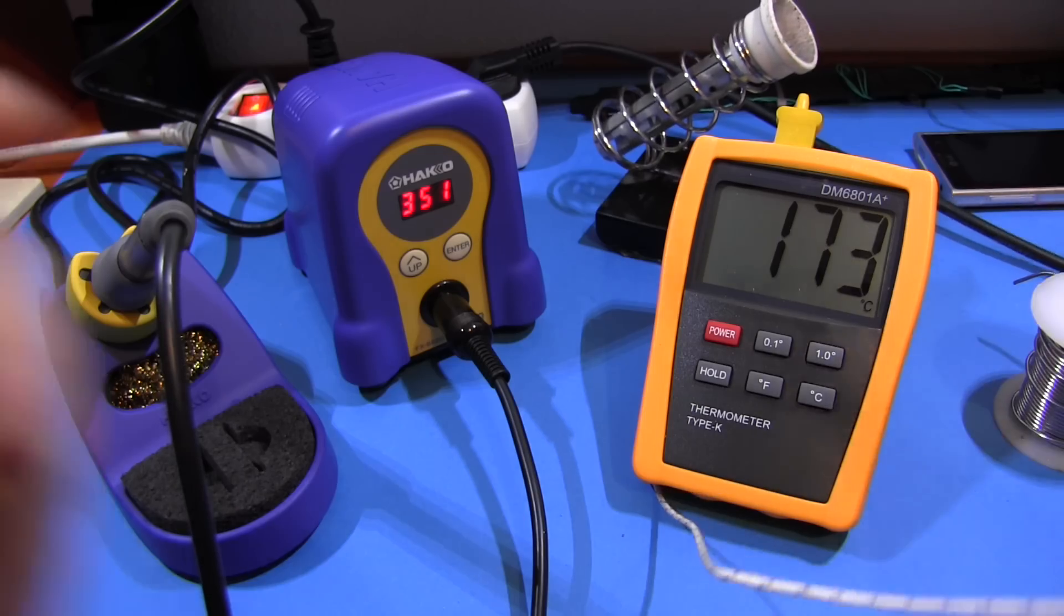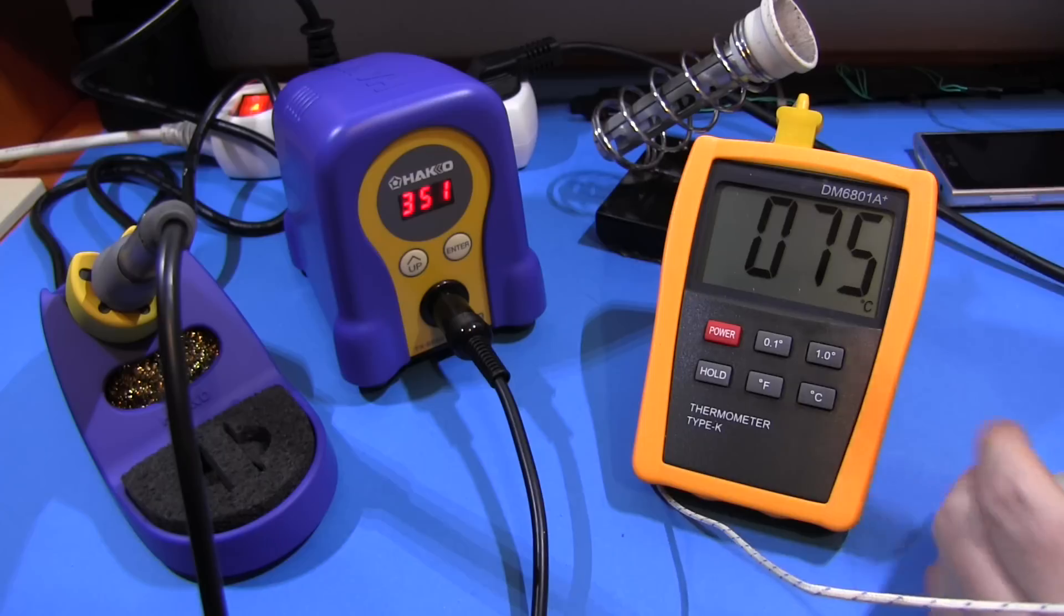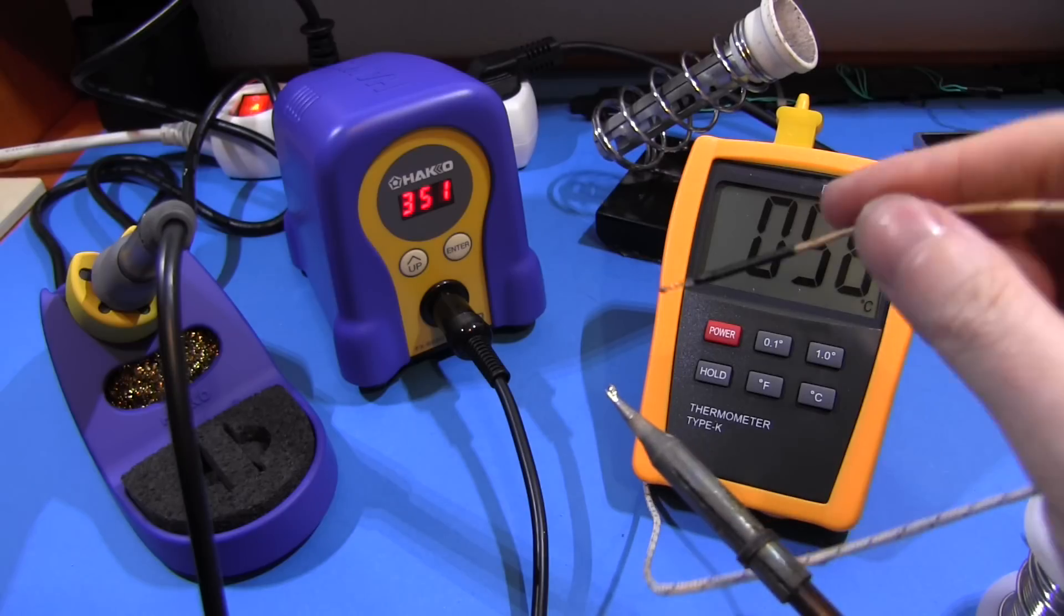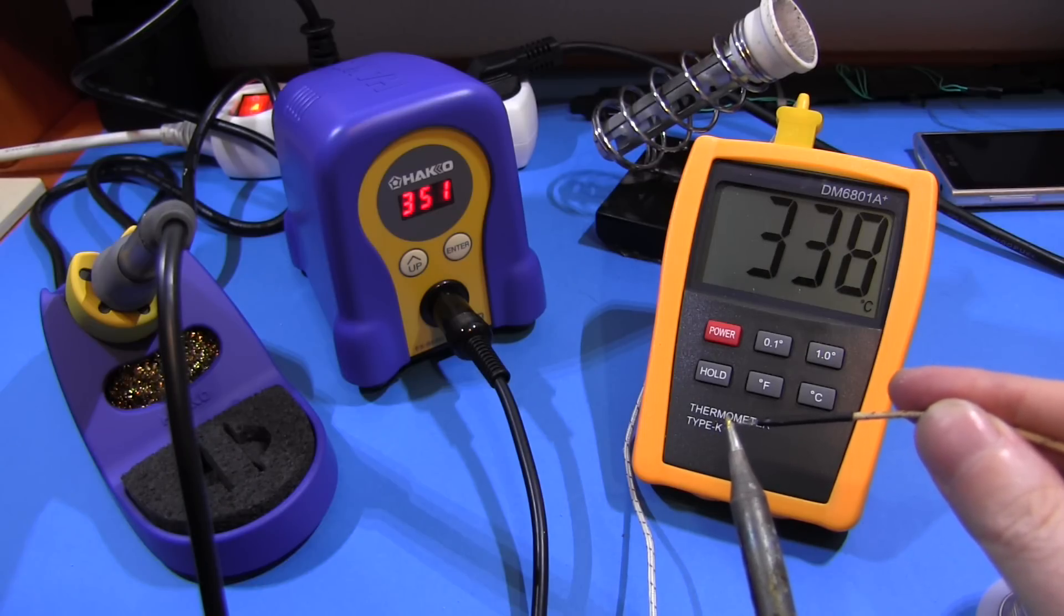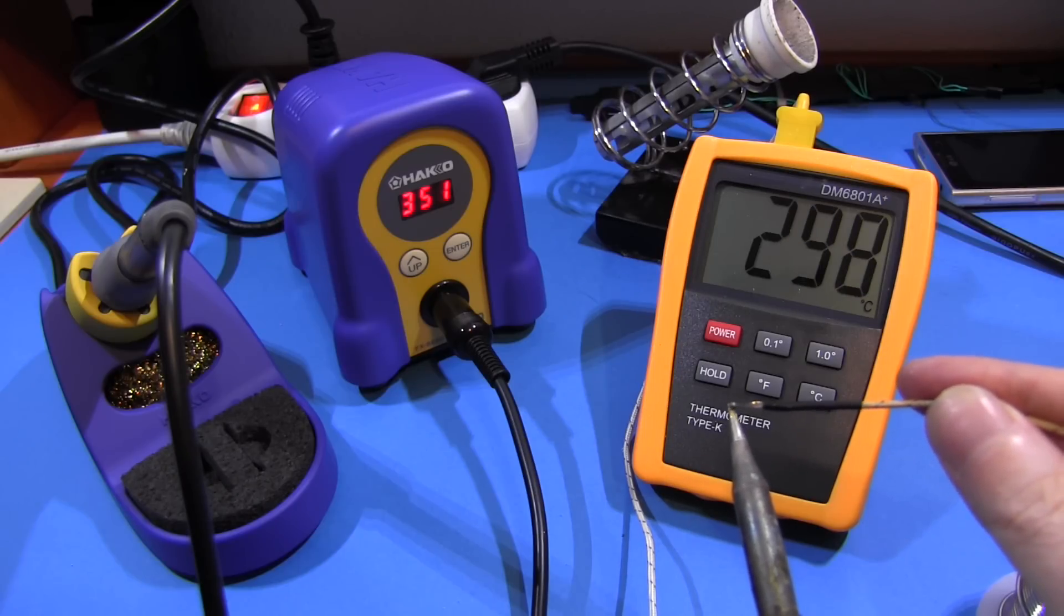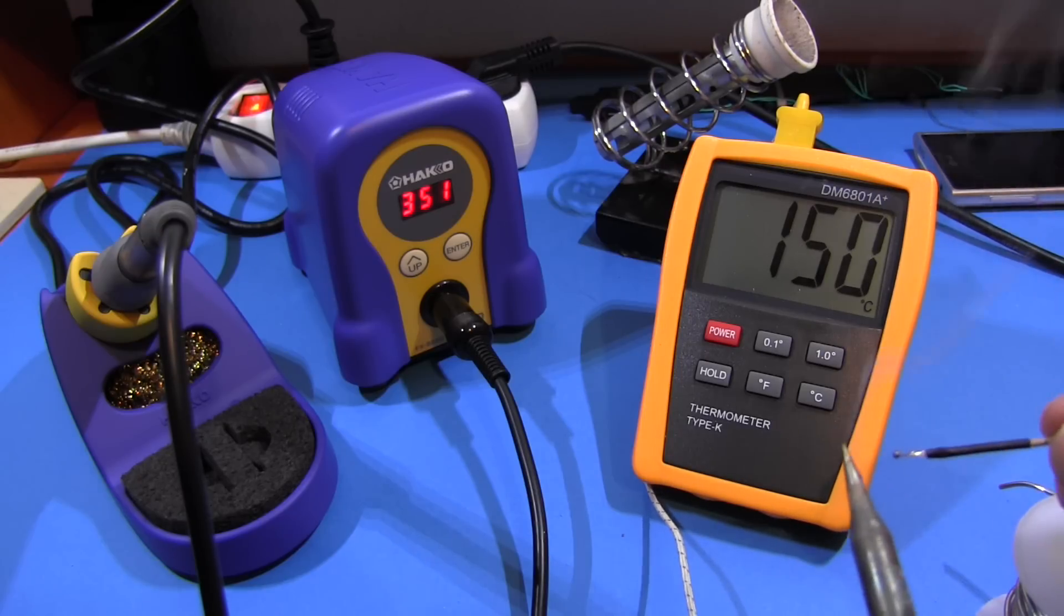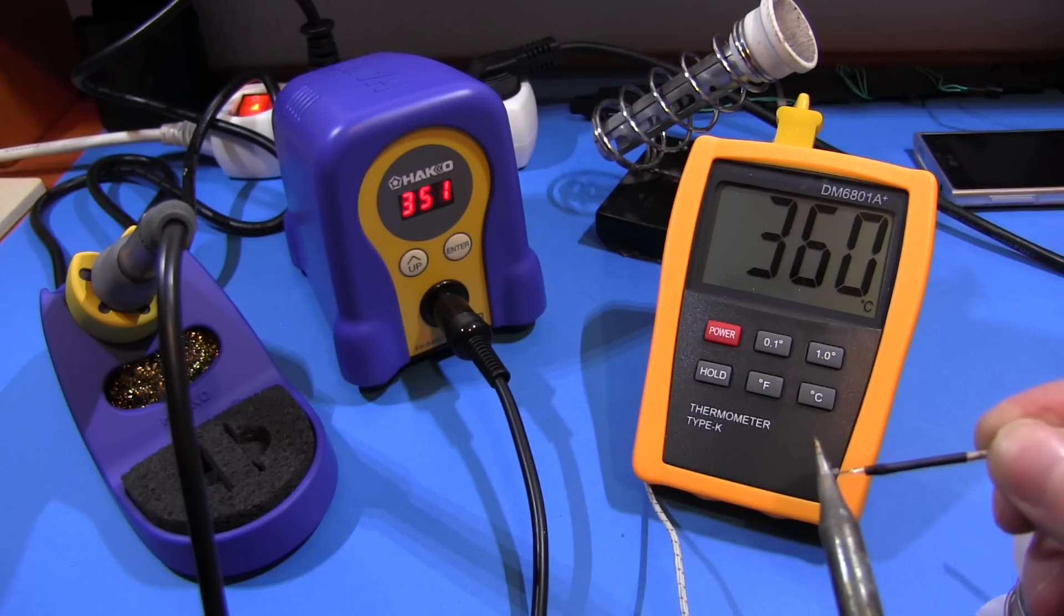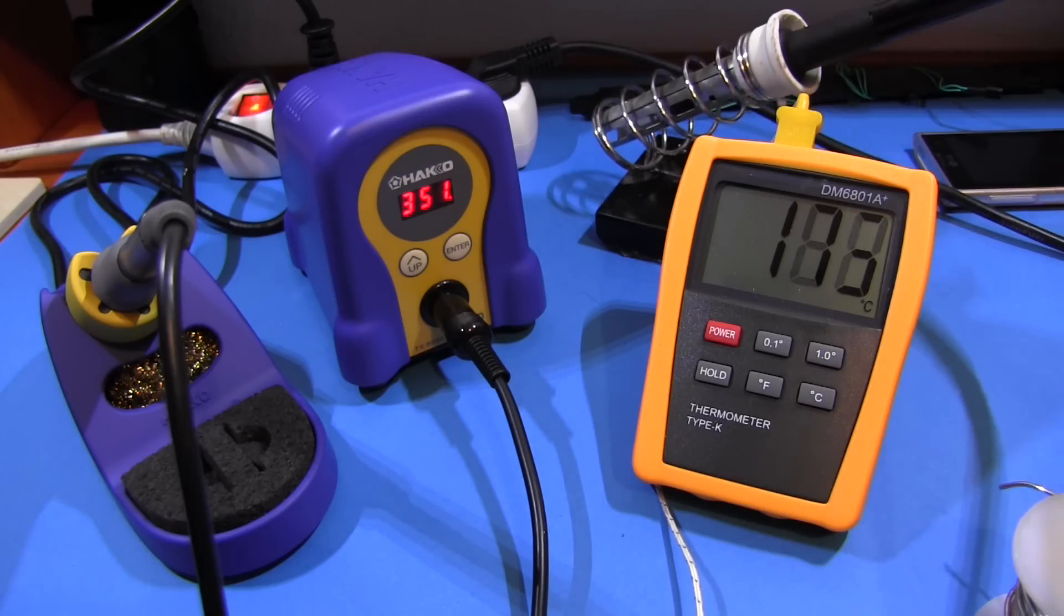And just to compare with the old iron, let me just clean the tip a bit, put a blob of solder on it. Let's see what we get. I'm covering up the screen. I saw 369 there for a second. But anyway, a little bit hotter than the Hakko. Another data point. Interesting.